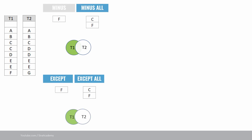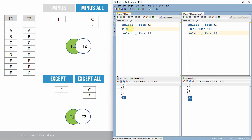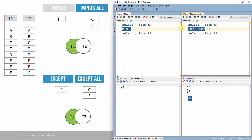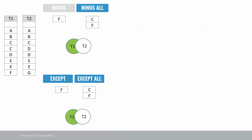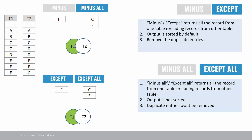Let us move ahead with minus, minus all, except, and except all. Using minus, as expected, it returns only F. Using minus all, C and F are returned. Instead of minus, you can use except — it is functionally equivalent to minus. The key learning: minus and except return all records from one result set excluding the other, with data sorted and duplicates removed. Minus all and except all do not remove duplicates and do not sort the data.